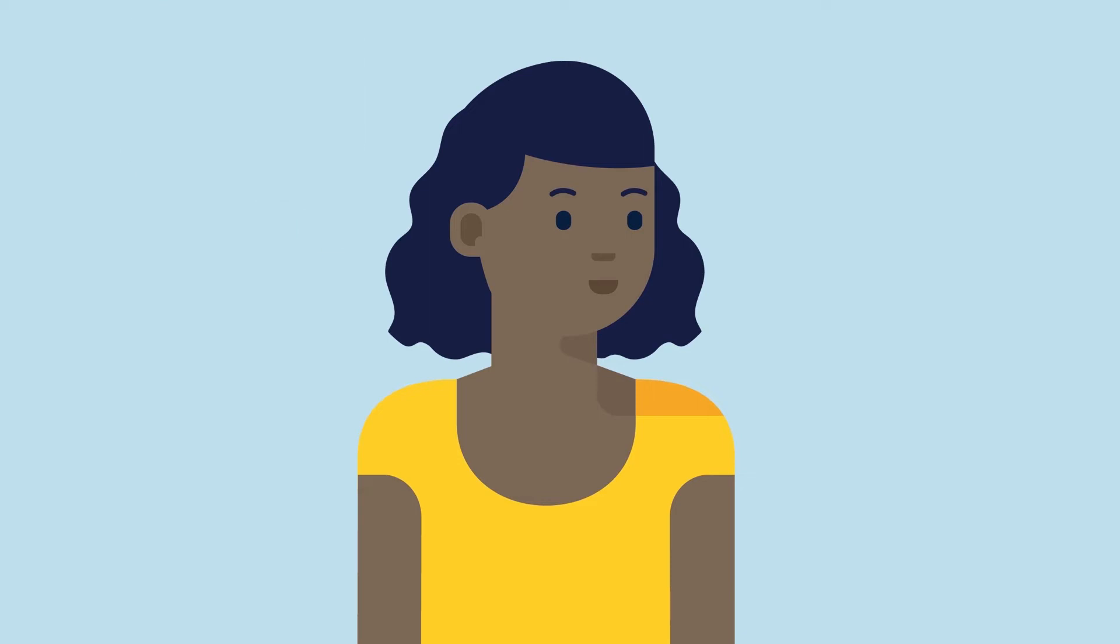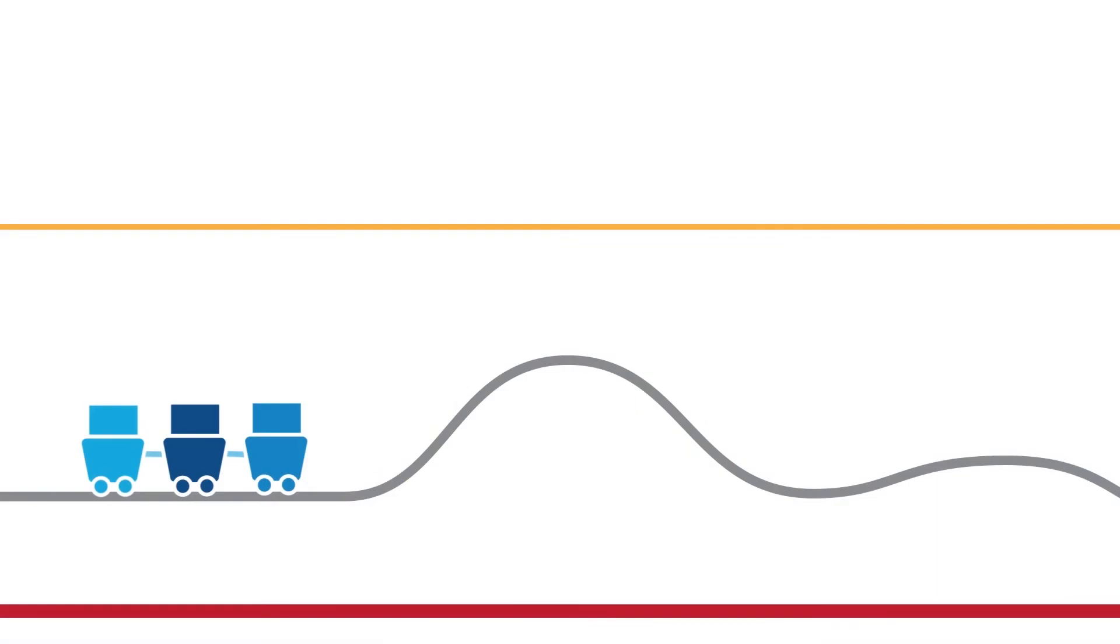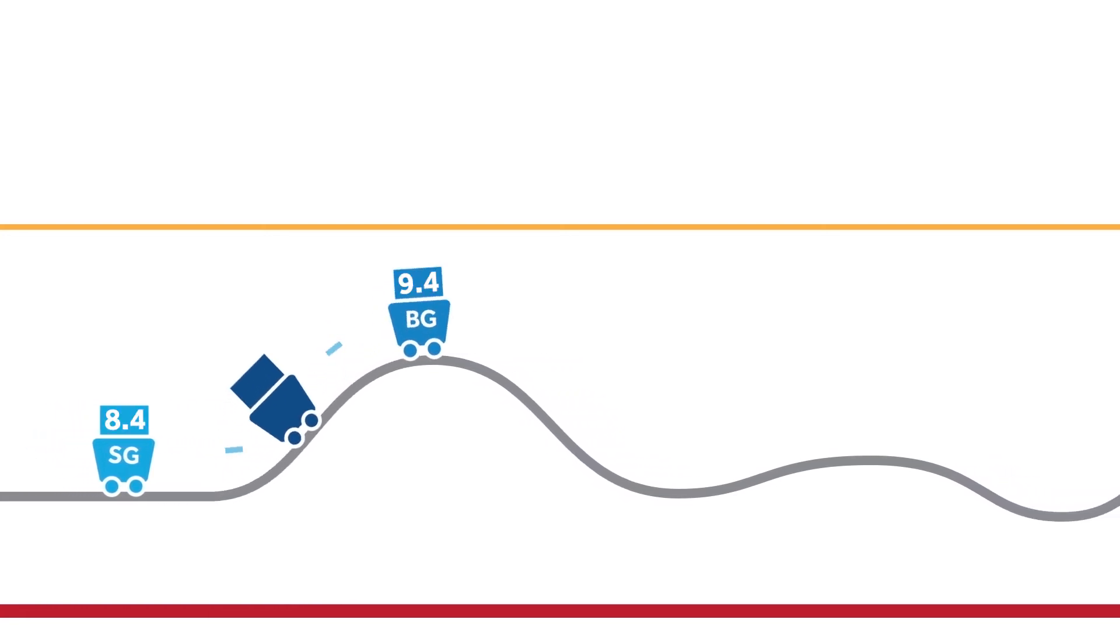Let's see how a roller coaster can help illustrate this. Picture your blood glucose and sensor glucose as cars on a roller coaster. The front car will be your BG and the back car will be your sensor glucose, or SG. As the roller coaster starts up the hill, you can see that the BG in the front car is leading the SG in the back car, and the numbers are different.